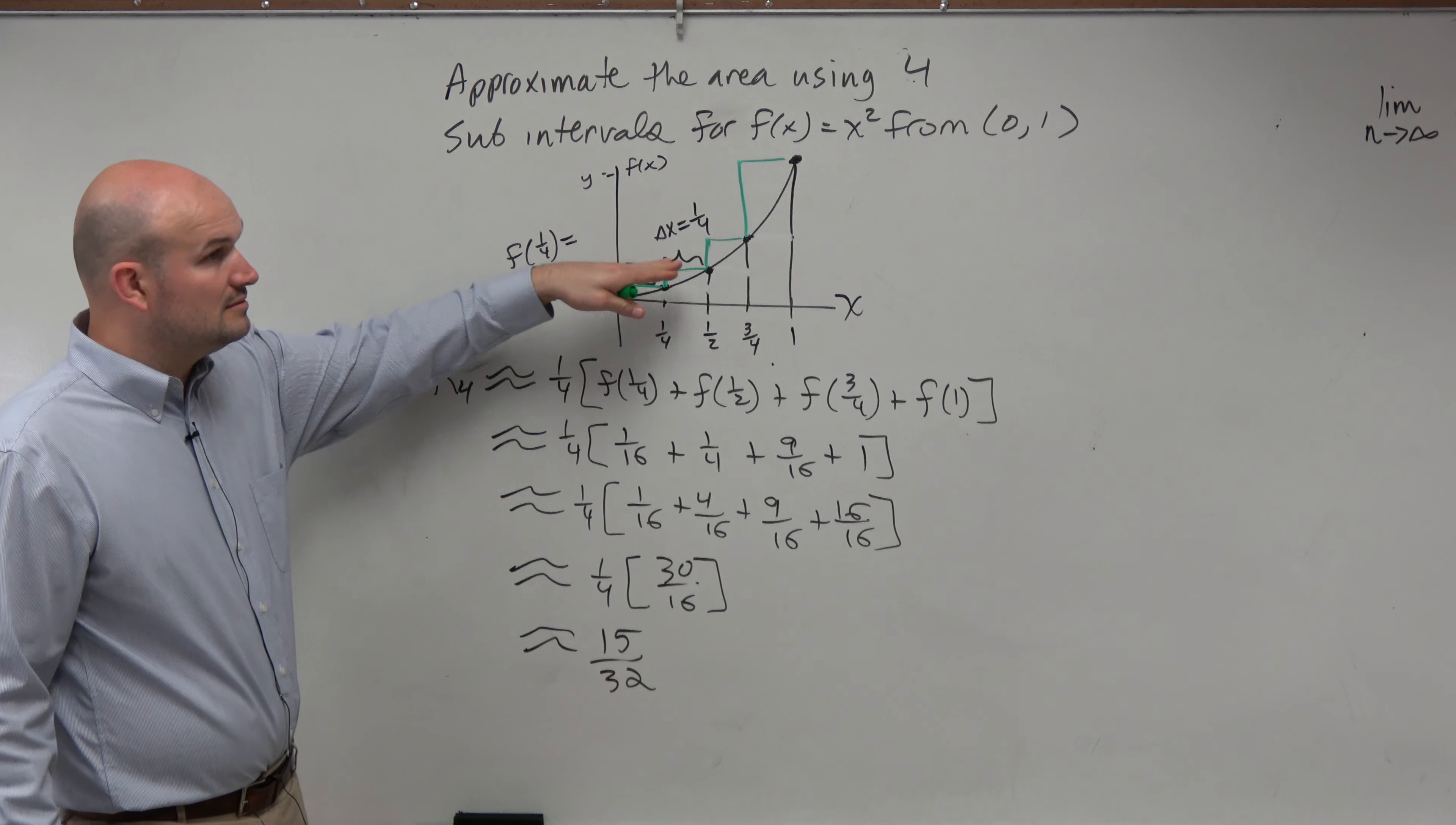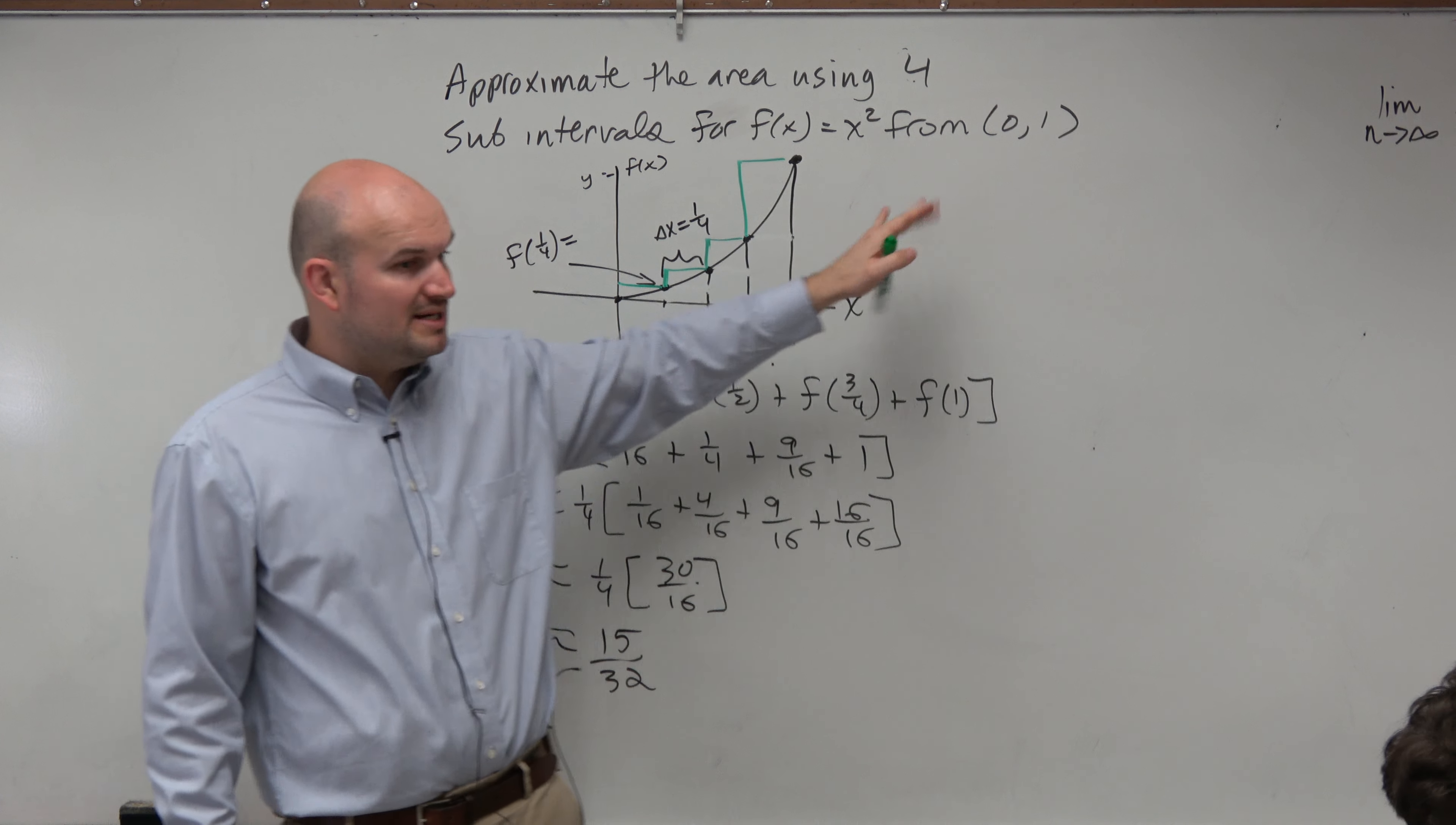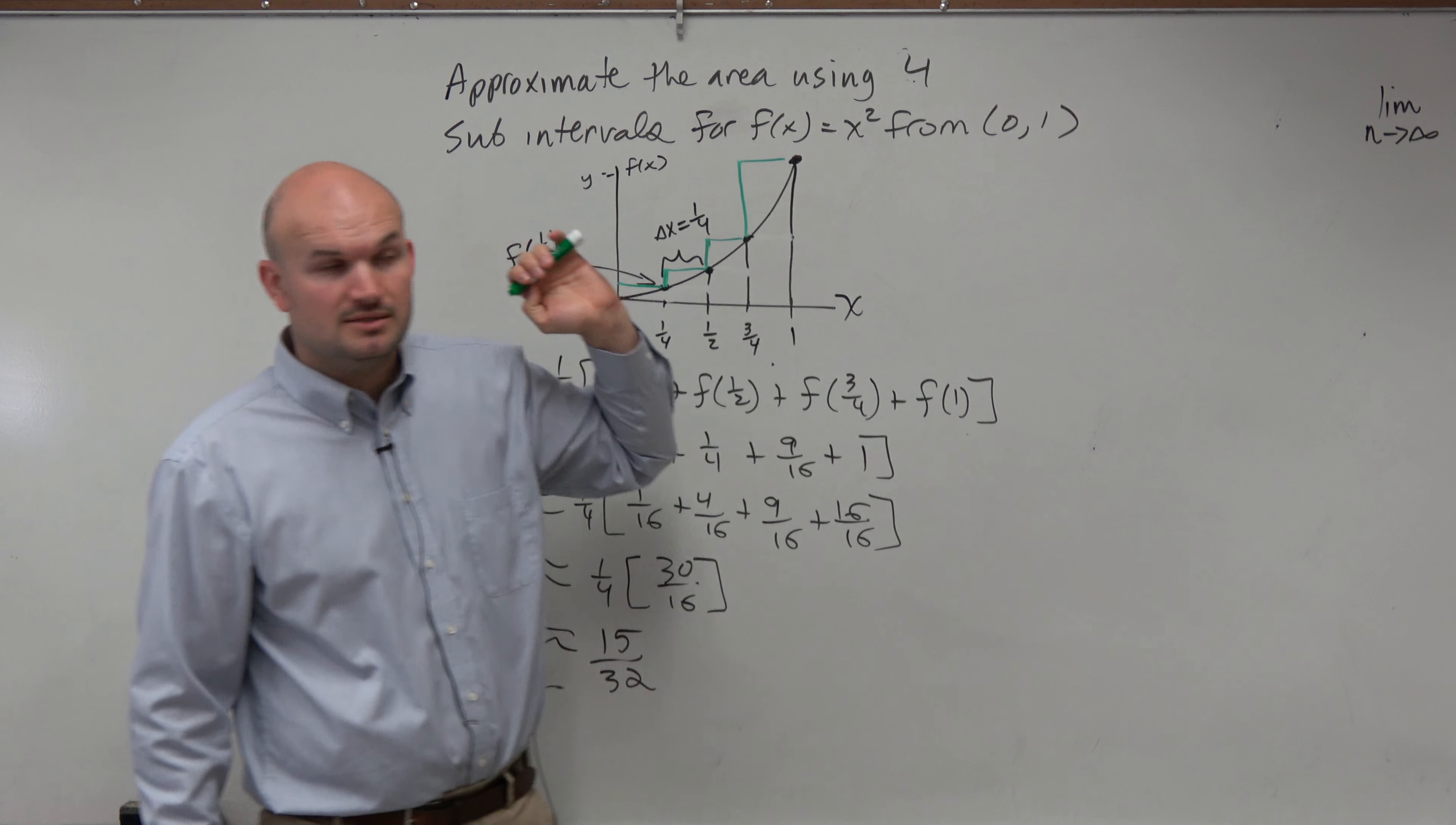And again, since we're doing the right-hand method, the graph hasn't changed. It's still concave up and increasing. But now we can see that we're doing an overhead, or we're doing an overestimate. Correct? Yes? OK.